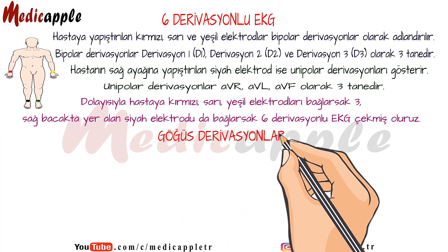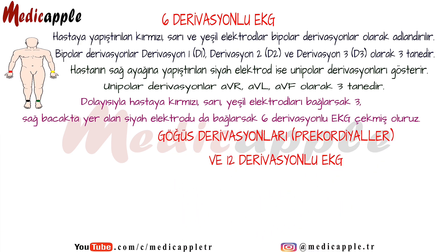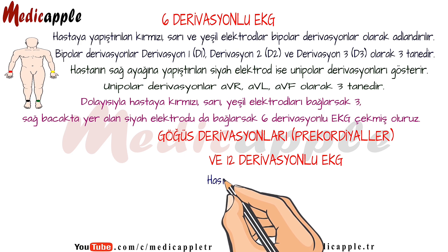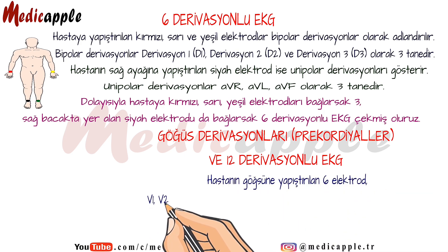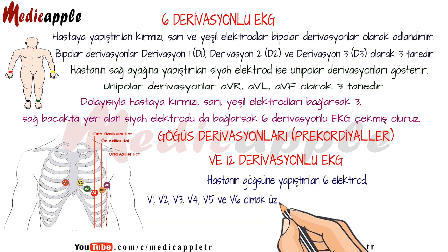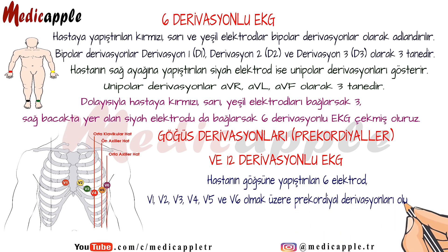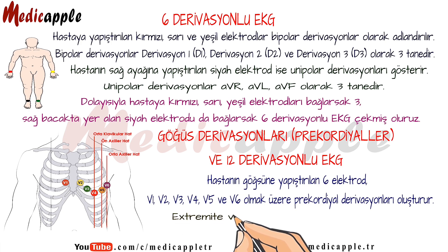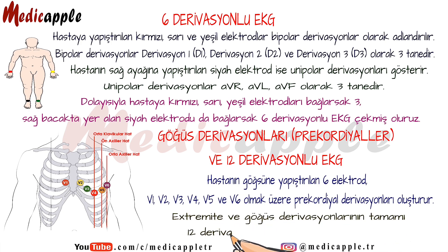Chest derivations — precordials — and 12-lead ECG. Six electrodes attached to the patient's chest form precordial leads: V1, V2, V3, V4, V5, and V6. All extremity and chest leads together constitute the 12-lead ECG.